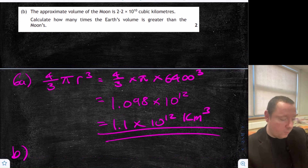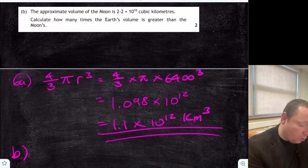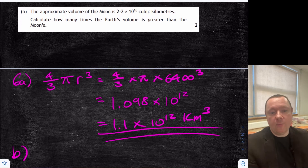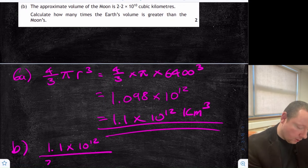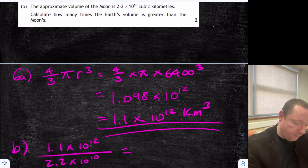Part B: the approximate volume of the Moon is 2.2 times 10 to the 10 cubic kilometres. Calculate how many times the Earth's volume is greater than the Moon's. Since it's asking 'how many times,' I need to divide the Earth's volume by the Moon's volume. So I do 1.1 times 10 to the 12 divided by 2.2 times 10 to the 10. Put that in the calculator with brackets, and you get 50.